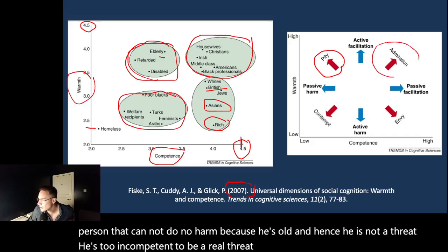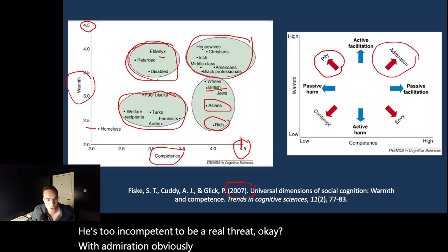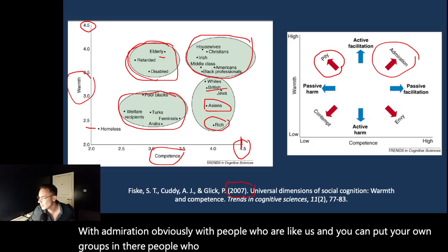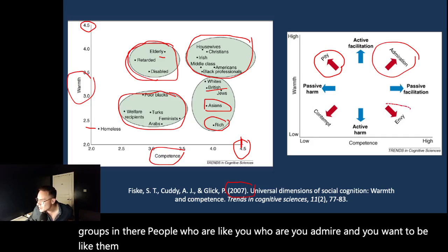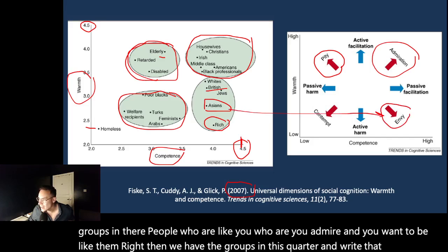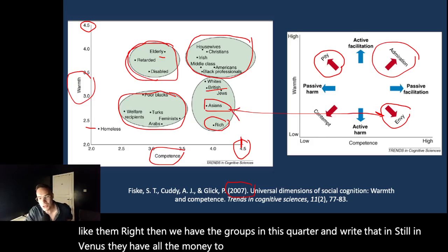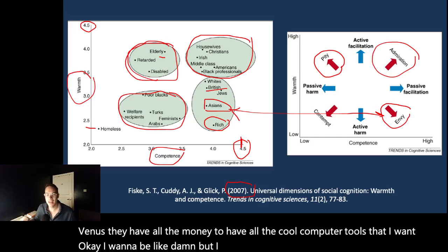We have admiration, obviously, with people who are like us. And you can put your own groups in there, people who are like you, who you admire, and you want to be like them. Then we have the groups in this quadrant that instill envy in us. They have all the money, they have all the cool computer tools that I want. I want to be like them, but I don't like them. It's envy. I want what they have. I don't want to be like them, I want what they have.